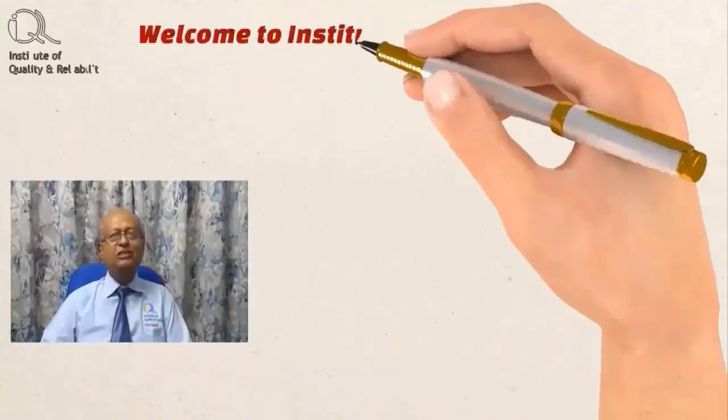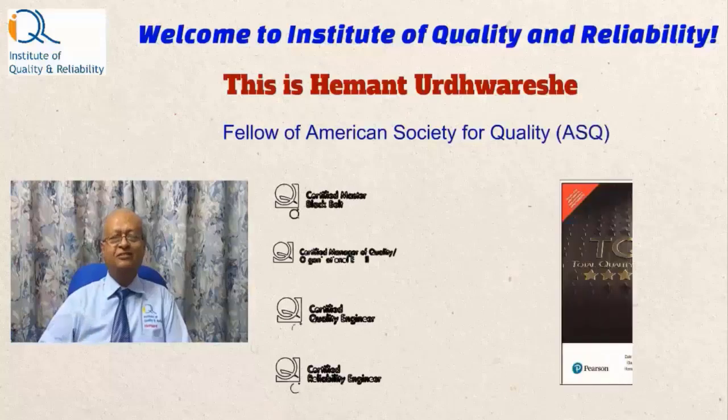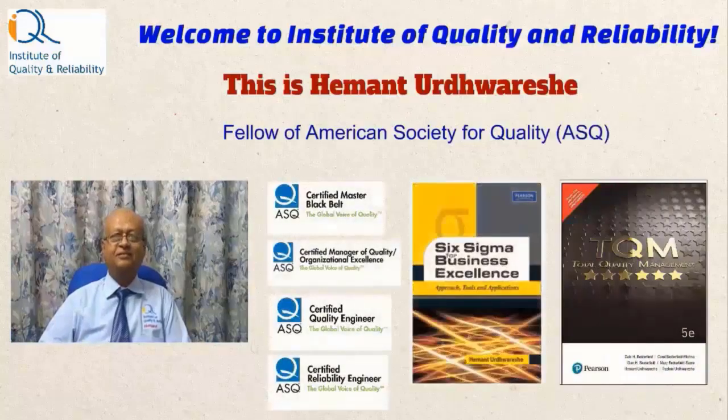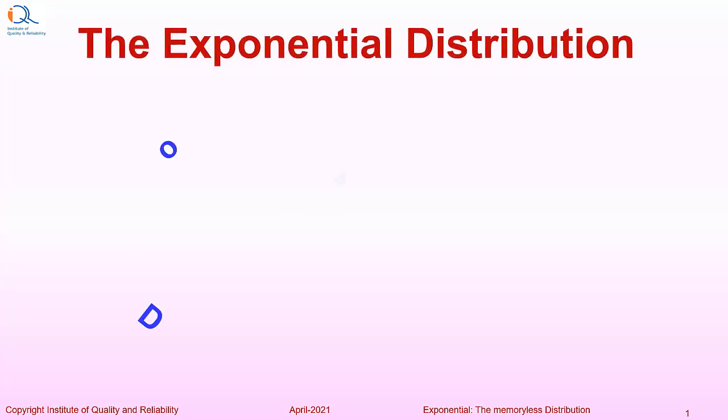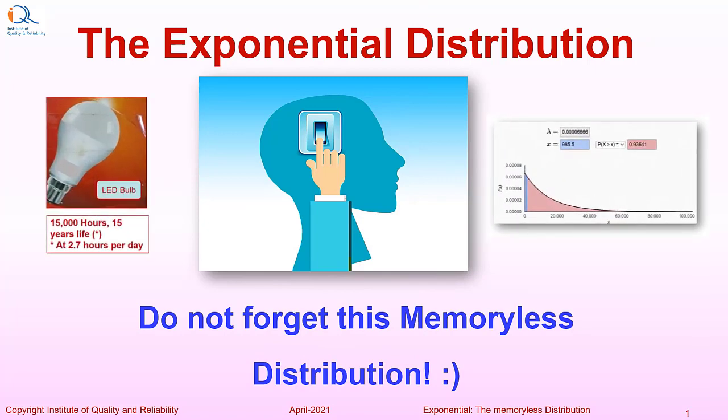Welcome to Institute of Quality and Reliability. Hi, this is Kaiman. The Exponential Distribution. Do not forget this memoryless distribution.